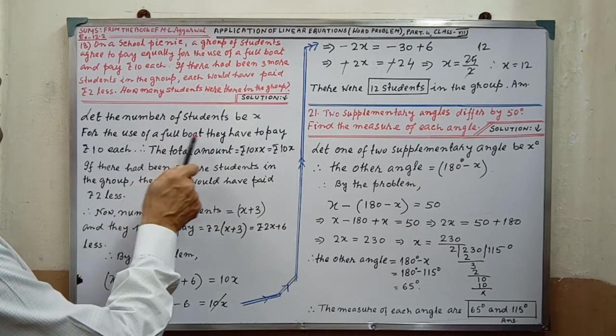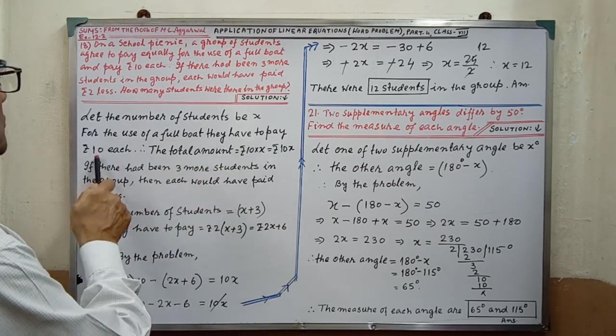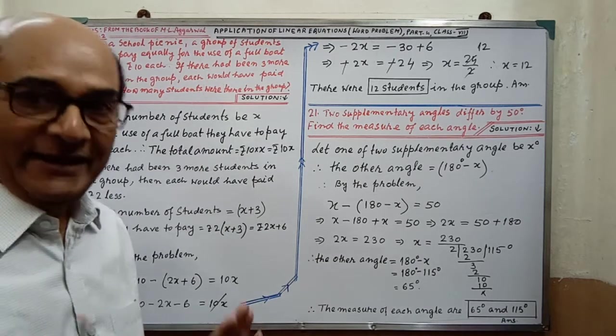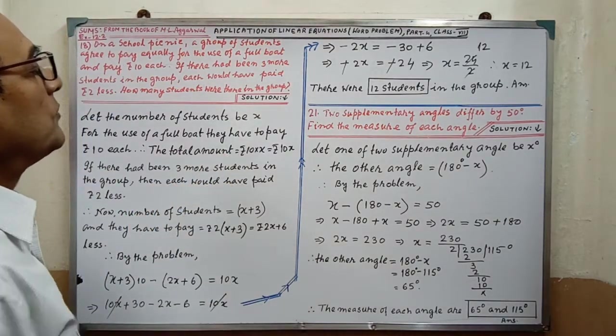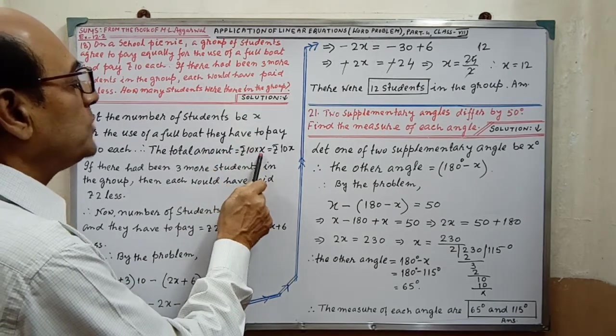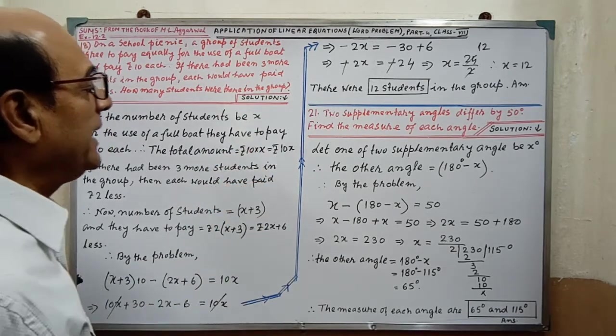For the use of a full boat, they have to pay rupees 10 each. And therefore the total amount for x students, that is rupees 10 into x equal to rupees 10x.